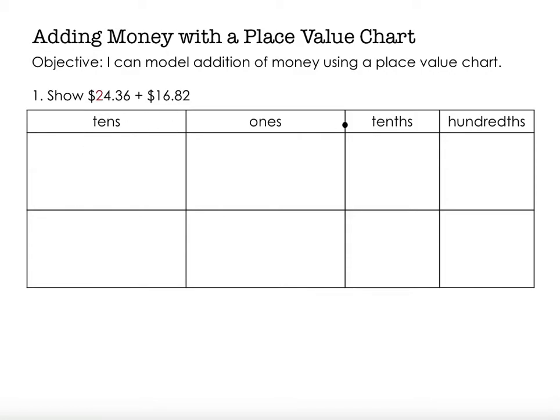So I'm going to put in $24.36. That's made up of two tens, so there are my two $10 bills. It's made up of four ones — one, two, three, four ones. Three tenths, and with money a tenth is represented by a dime because it takes ten dimes to equal $1. So we have three tenths, and then we have six hundredths. Hundredths are shown with pennies because it takes 100 pennies to be equivalent to $1, so I'll count out six pennies.